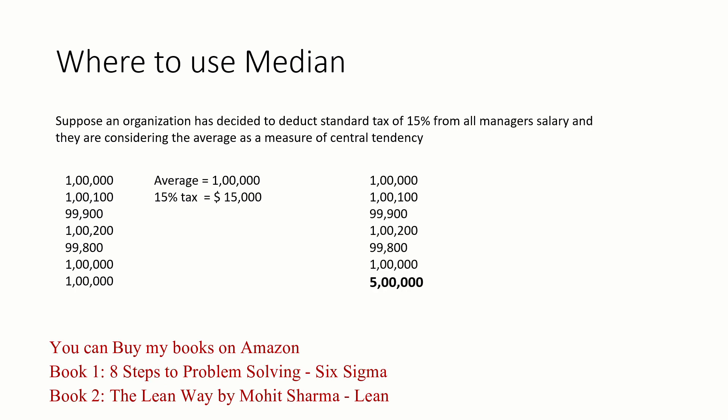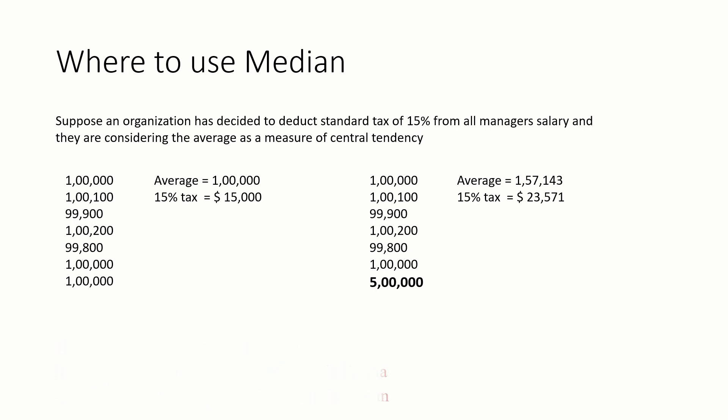Now what happens? There is a mistake: instead of 1 lakh in the last entry, it has been typed as 5 lakh. The average will go up — it was 1 lakh earlier but now the average is 1 lakh 57,143 and 15 percent tax on that is $23,571. So each manager has to pay $23,571, which is way above the tax they were supposed to pay. If we use median here instead, the data is arranged in ascending or descending order, and that 5 lakh entry goes to the top or bottom. The median of this data set is still 1 lakh, and the standard tax would be $15,000 only.